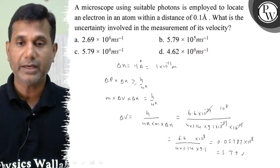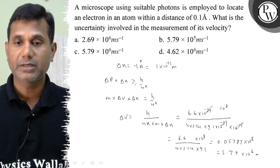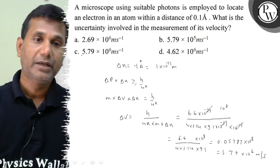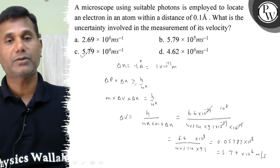That is 5.79 into 10 to the power 6 meter per second. Therefore, option C is correct. Okay, what's your best for you?